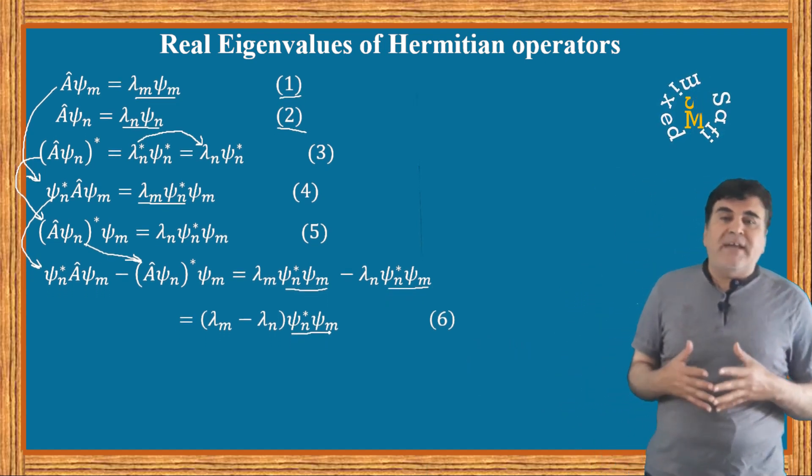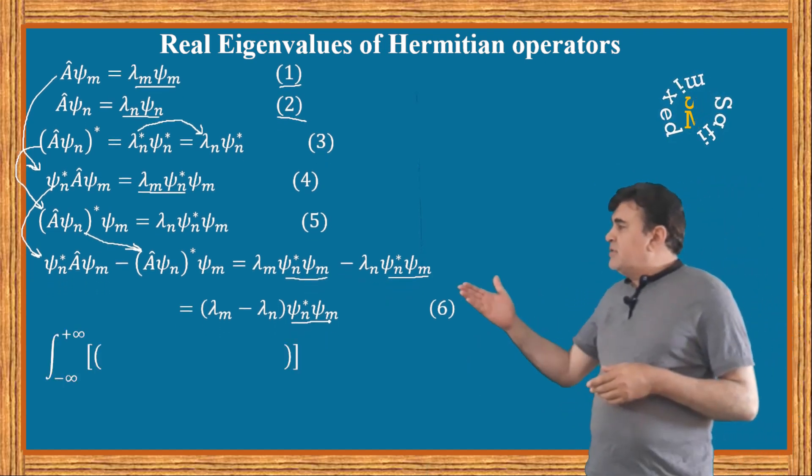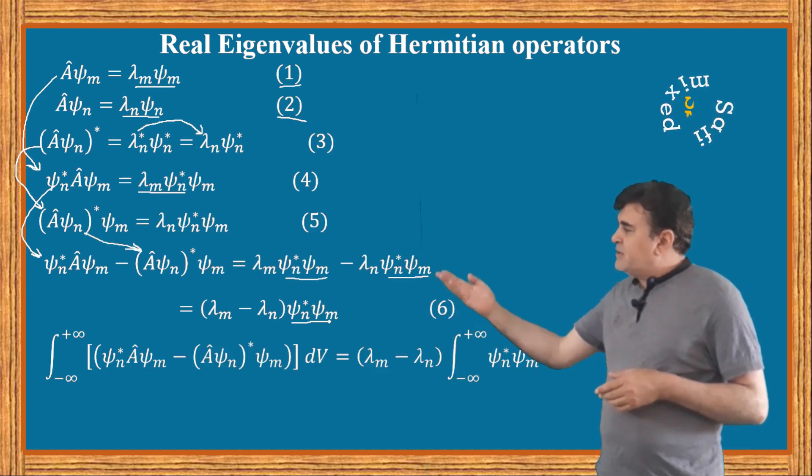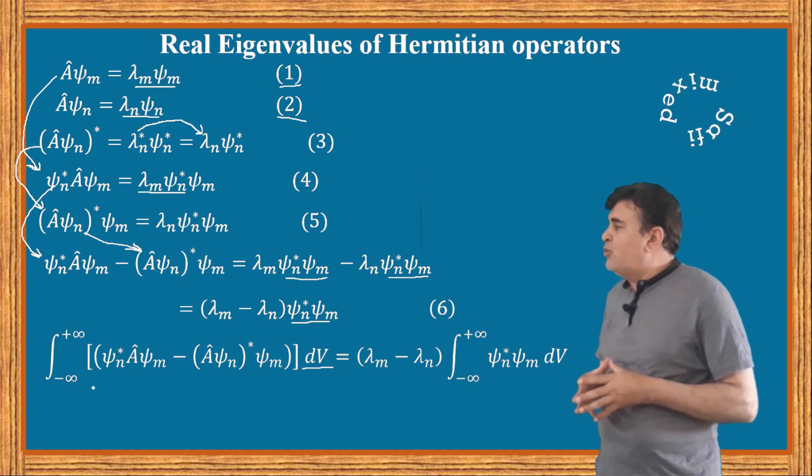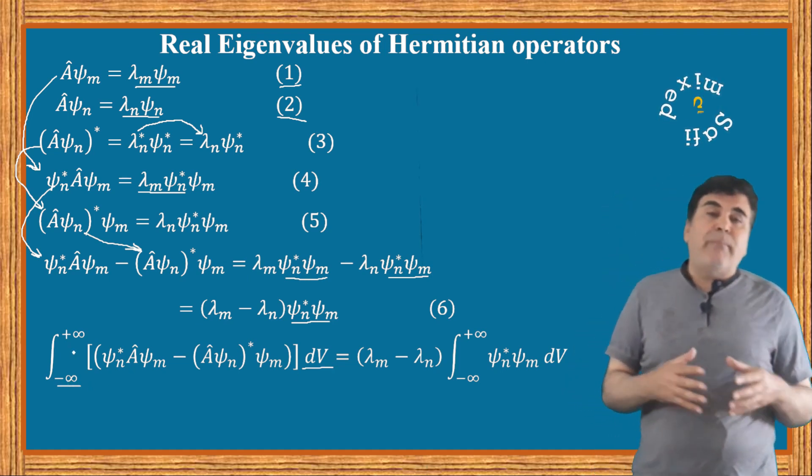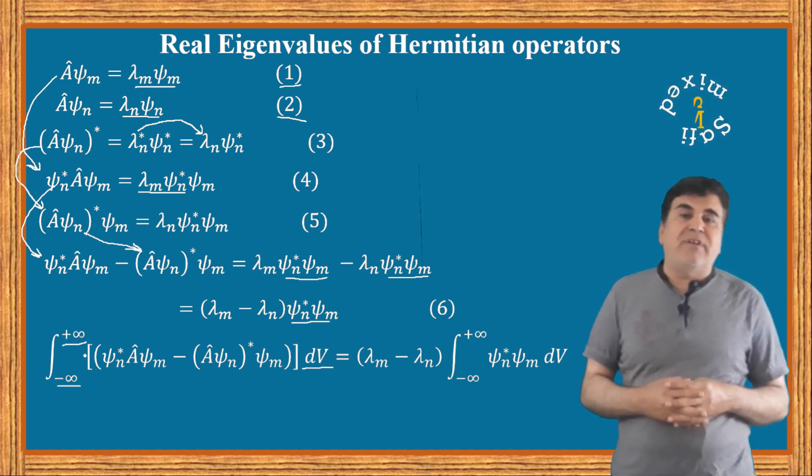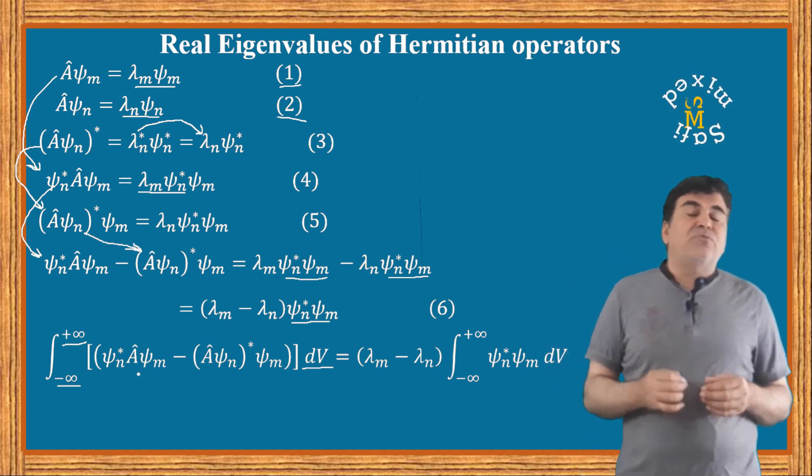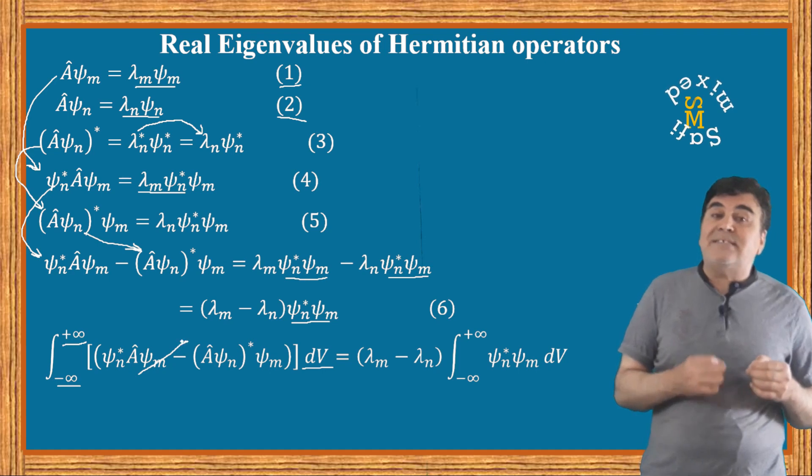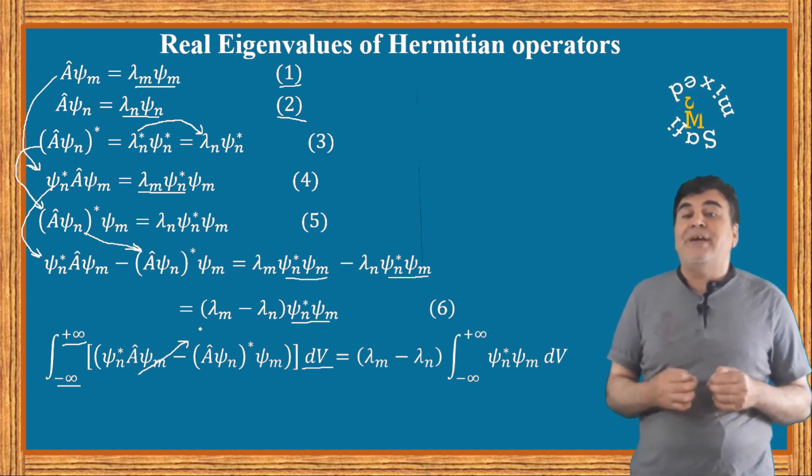Now integrating equation 6 for the whole space, we can write the result into this form where I have just integrated the two sides of the equation with respect to volume dV from minus infinity to plus infinity. If you carefully observe, the left side of this equation is just the hermiticity condition on operator A.